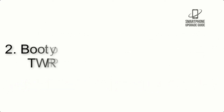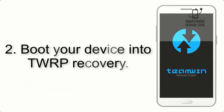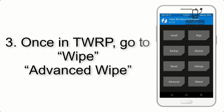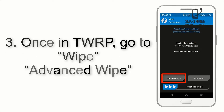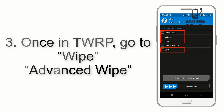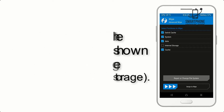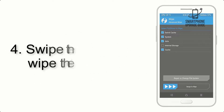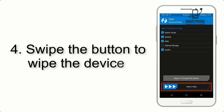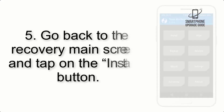Step 2: Boot your device into TWRP recovery. Once in TWRP, tap on Advanced Wipe and select the checkboxes as shown in the image, excluding internal storage.